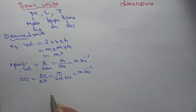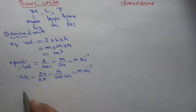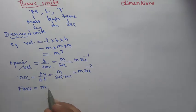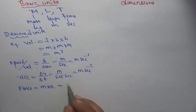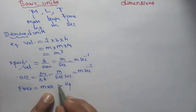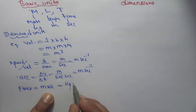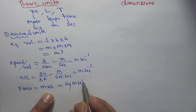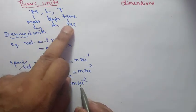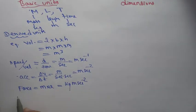Moving ahead, force = mass × acceleration. Mass is in kilograms, acceleration is m s⁻², so force = kg m s⁻². Let us also look at work or energy.